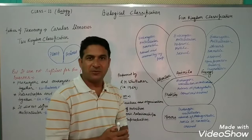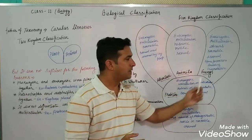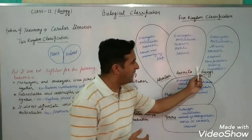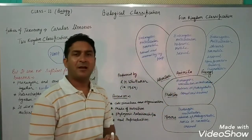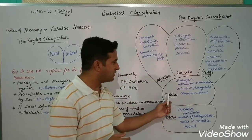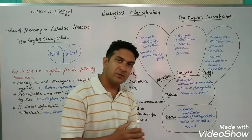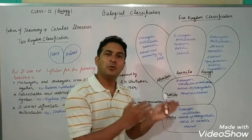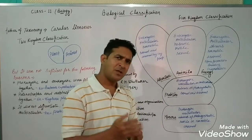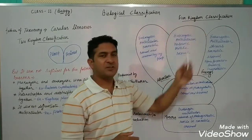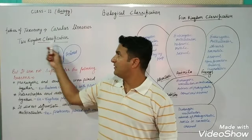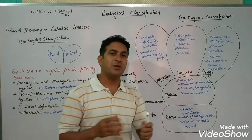The key speciality of the five kingdom classification is that R.H. Whittaker gave a proper place to fungi. Before this, in the four kingdom classification, there were Monera, Protista, Plantae, and Animalia, but no place for fungi. In the five kingdom system, fungi finally received their own kingdom. Both the two kingdom and five kingdom classifications are very important as they are covered in the NCERT book.